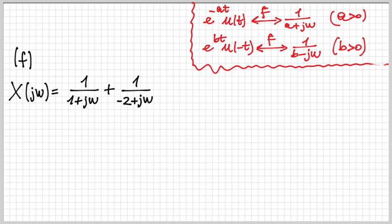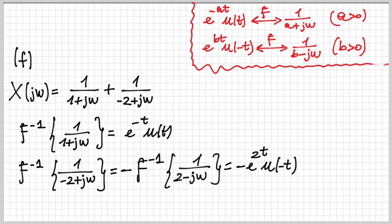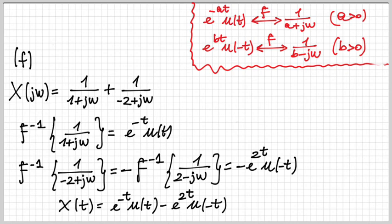Part f has X(jω) = 1/(1 + jω) + 1/(−2 + jω). The first term anti-transforms to a right-sided exponential. The second term, with a negative value, is rewritten as minus 1/(2 − jω), which matches the left-sided exponential case. So x(t) = e^(−t)u(t) − e^(2t)u(−t) — the sum of a right-sided and a left-sided exponential.